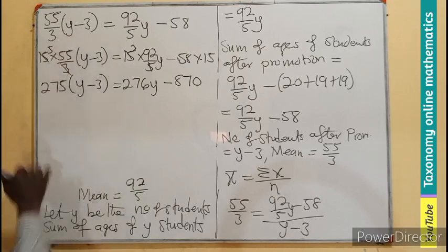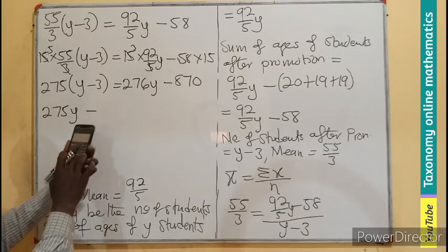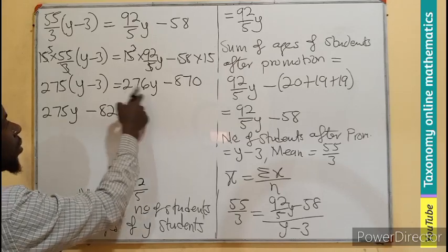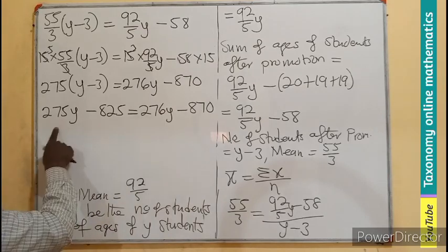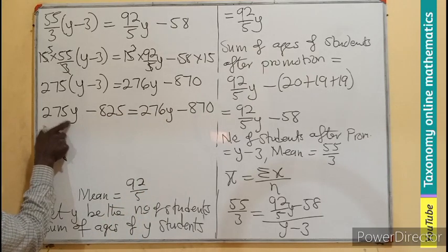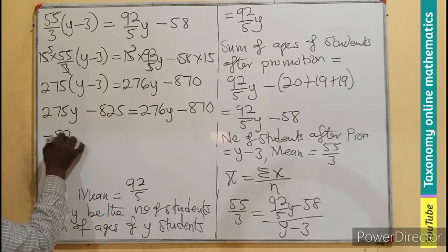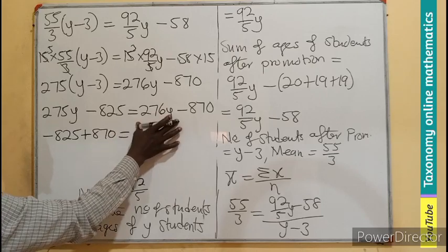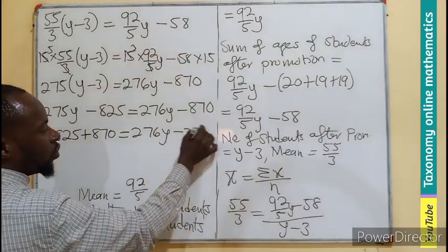Let's expand here to have 275Y minus 275 times 3, that will be 825. We still have our 276Y minus 870. I can see grouping of like terms. We can decide to bring this here and this there. We maintain negative 825, bring the negative to become positive 870, maintain our 276Y, bring the positive to become negative 275Y.